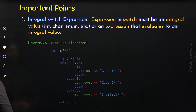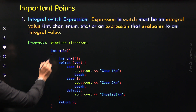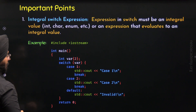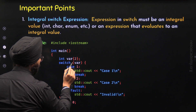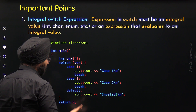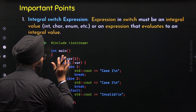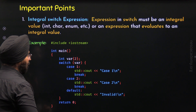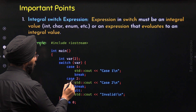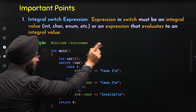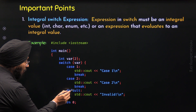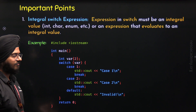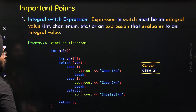Let's take an example to properly understand this. Within the main function, I have defined variable var of type integer with value 2. This is an integer variable, so we can pass this variable to switch — it will yield an integral value, so there is no problem. Within the braces, we have these cases and the default case. We know that var is holding value 2, therefore case 2 is the matching case, and 'case 2' will be displayed on the screen. Because of the break statement, the default case will not execute. The output of this program will be 'case 2'.